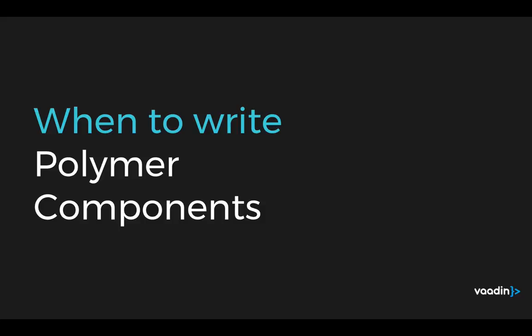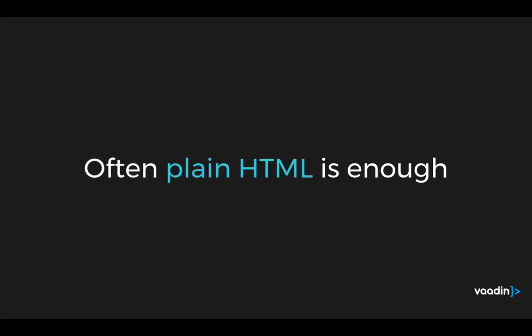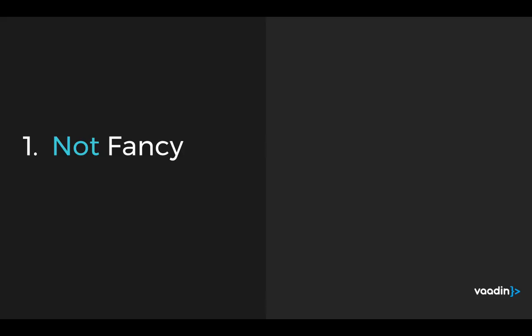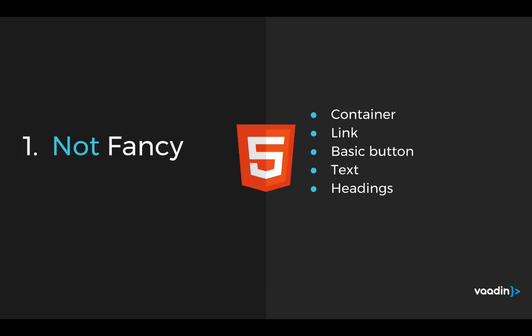So when would you use a Polymer component, especially versus a plain HTML element? Often, plain HTML is enough. The container element there was just a div. Inside there are more complicated elements like the browse and watch elements which do more things. If what you need isn't very fancy — something like a container or a button — then just use HTML5: an anchor for a link, a button for a button, a P tag for text. You don't necessarily need to create a fancy component for any of these.